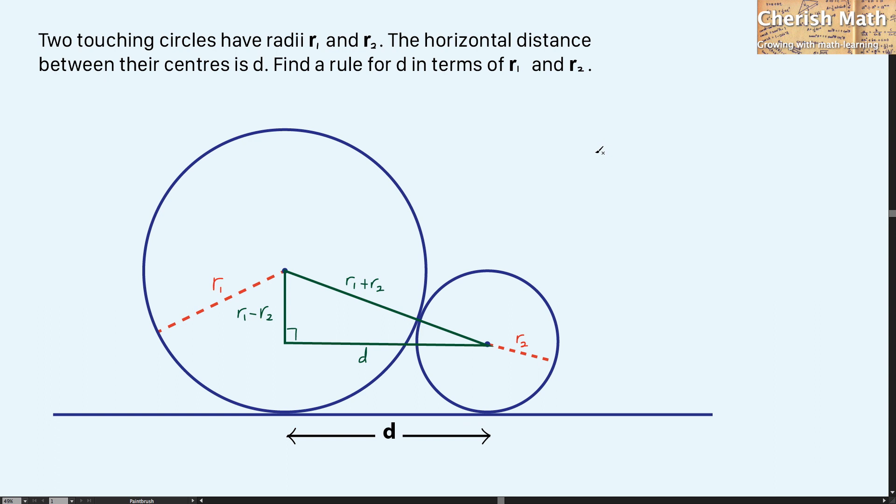The next step I'm going to work out by using Pythagoras' theorem to solve this problem. R1 plus R2, or the hypotenuse, squared is the same as R1 minus R2, squared, plus D squared.